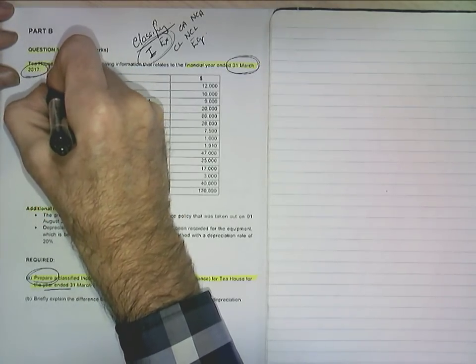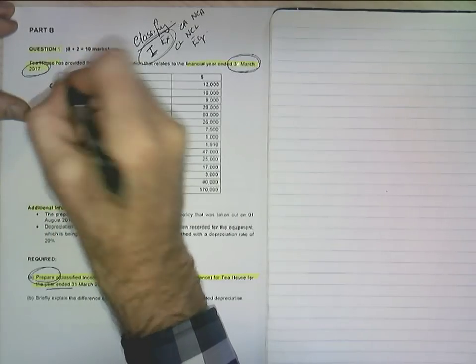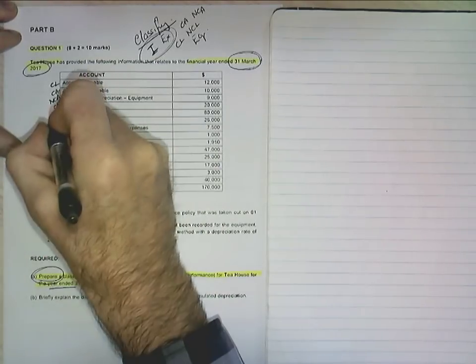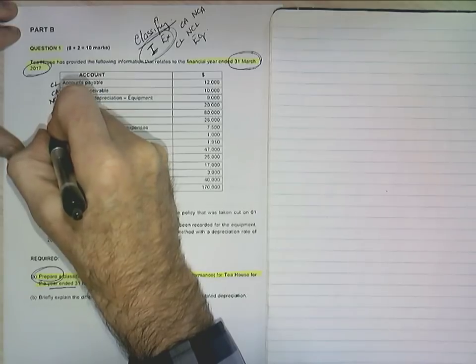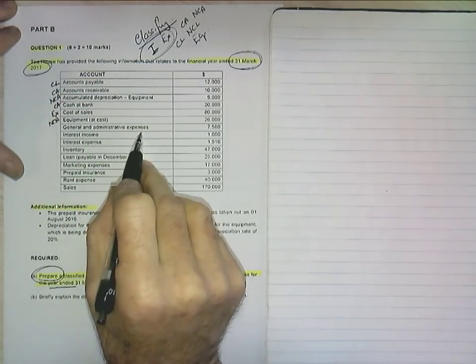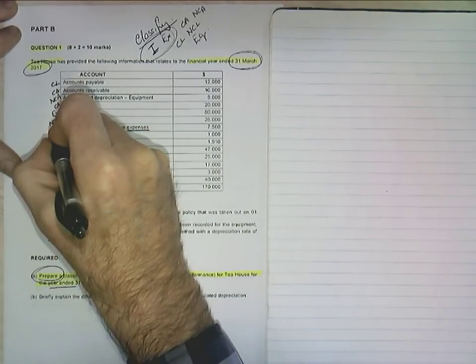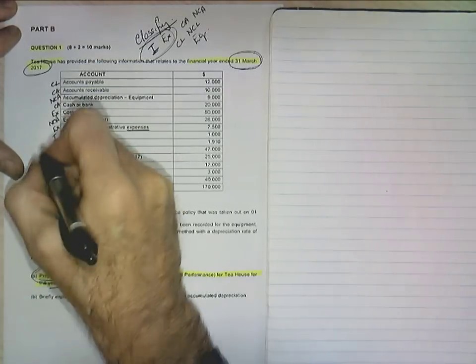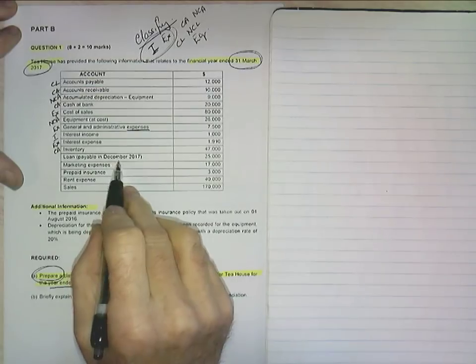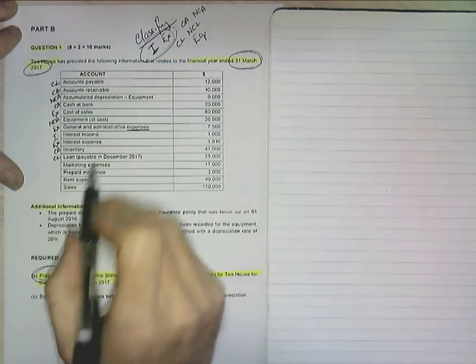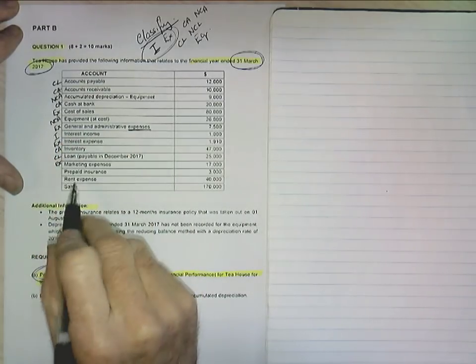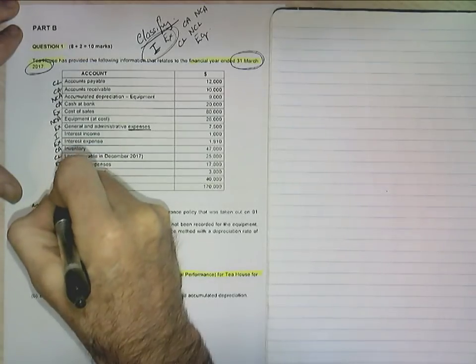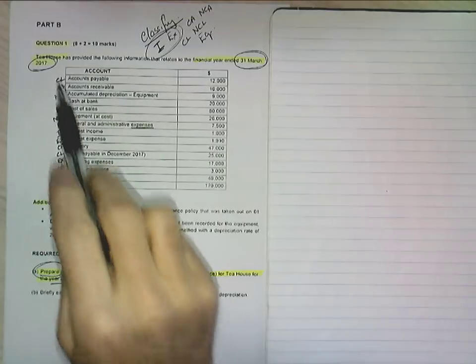So I'll go through and put this in. Let's say accounts payable, you can call them out if you want to. Current liability, accounts receivable is a current asset. Accumulated depreciation of equipment is a non-current asset. Cash at bank is a current asset. Cost of sales, that's expense. Equipment at cost, non-current asset. General and administration expenses, well, as it says, expense. Interest income, well, that's income. Interest expense, well, that's telling me. Inventory is a current asset. Loan, which is payable on December 2017, so that must make it a current liability. Marketing expenses are self-explanatory. Pre-paid insurance, now that's a current asset. Rent expense, as it says, it's an expense. And we've got sales, which is my income.